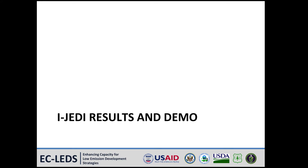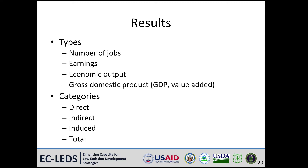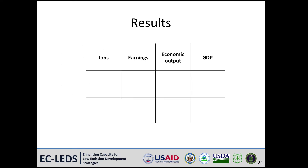Before looking at the wind results sheet, let's talk about the iJEDI results and their structure. iJEDI provides results of four types in three categories, as well as total results. The types of results are number of jobs, total earnings, economic output, and value added. Value added is another term for gross domestic product. Total earnings include the earnings of all jobs supported by the project. The three result categories correspond to direct, indirect, and induced impacts.